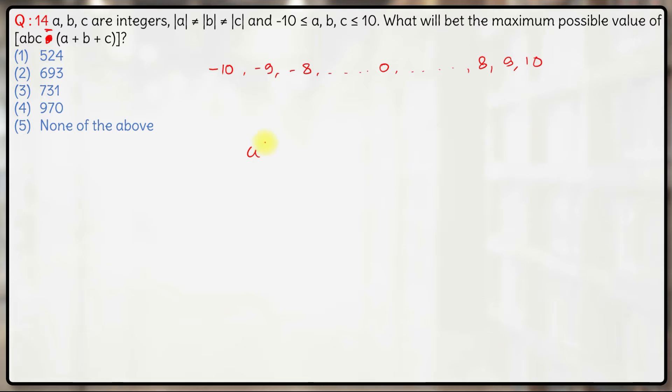Now since we want to maximize the value of A into B into C minus of A plus B plus C, first of all A into B into C should be maximum possible. Now the maximum possible value of product of ABC we can obtain if one of them has an absolute value of 10.